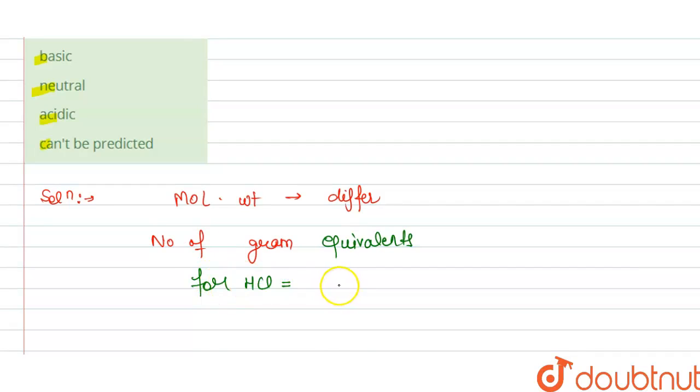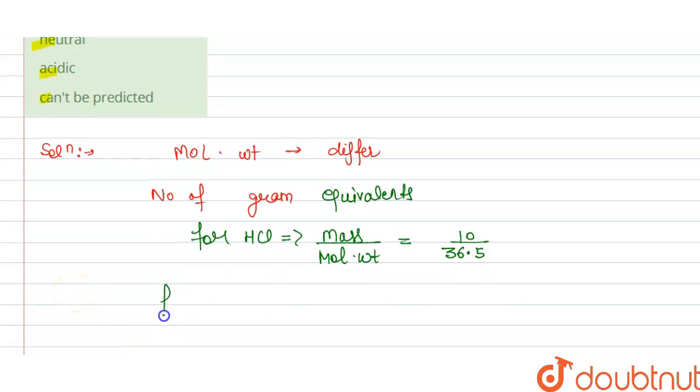for the HCl, we have the gram equivalent is equals to mass divided by molecular weight. So this will become 10, and for HCl we have the molecular weight is 36.5. And for NaOH